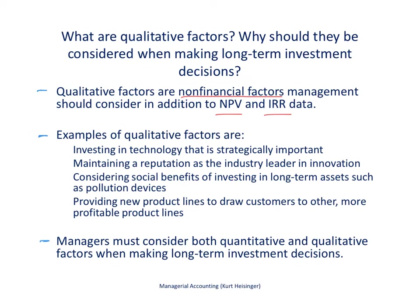What are some examples of qualitative factors that companies may want to consider? It might be that investing in technology is strategically important for a company — even though the numbers may not yield a positive net present value or an internal rate of return greater than the required rate of return. There may be technology we want to invest in that is strategically very important. Also, it may be that we want to maintain a reputation as the industry leader in innovation, so we will continue to put resources into innovating new products.